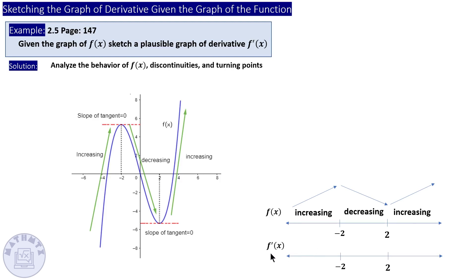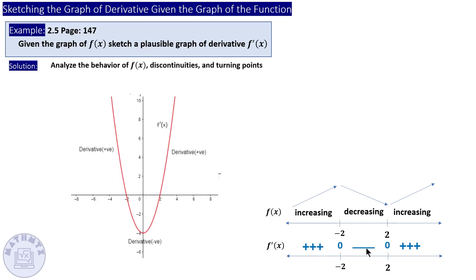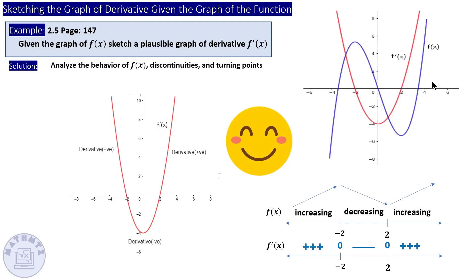For this graph: the function is increasing, then there's a horizontal tangent line so the slope is zero, then it's decreasing so the slope is negative, then slope is zero again, then increasing so slope is positive. I put the behavior of the slope on a number line and translate it into signs for the derivative. Where increasing, the derivative is positive; at the turning points it's zero; where decreasing it's negative. Sketching with a smooth curve gives a parabola shape, which makes sense if the function is degree 3 and the derivative is degree 2.